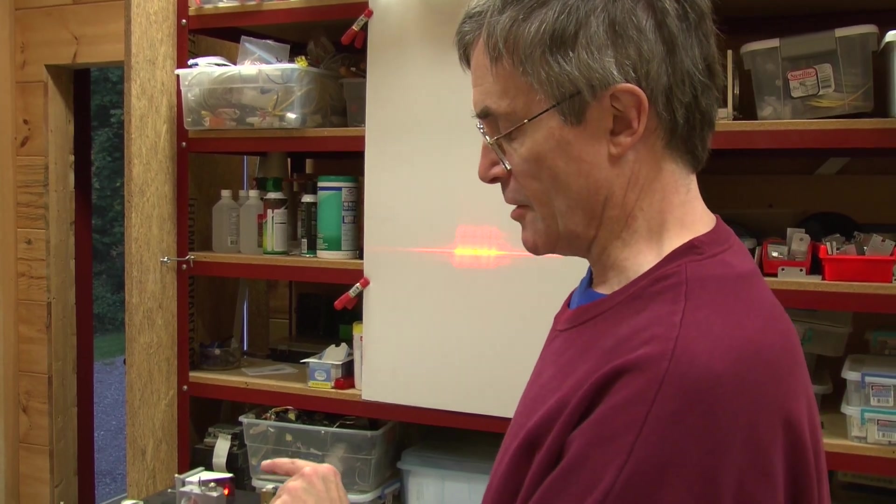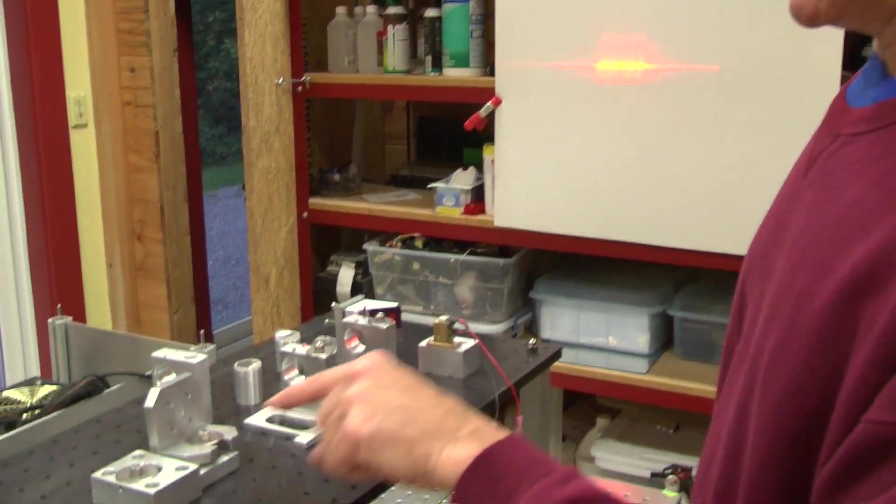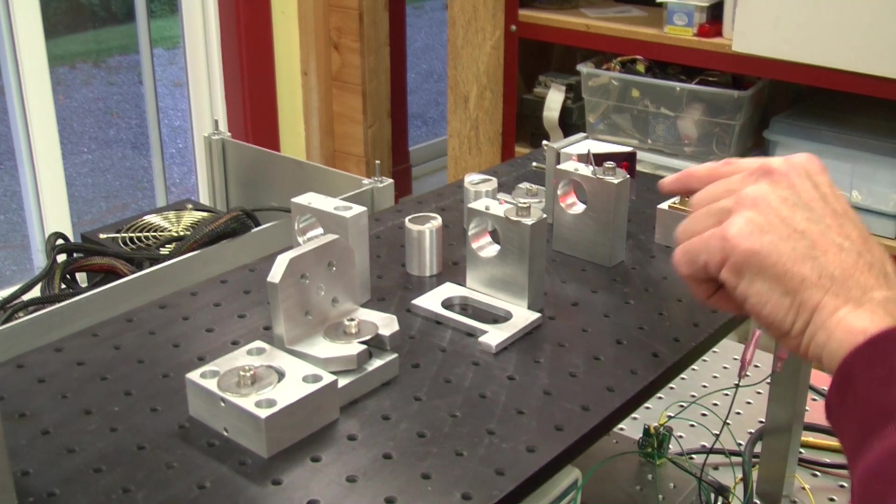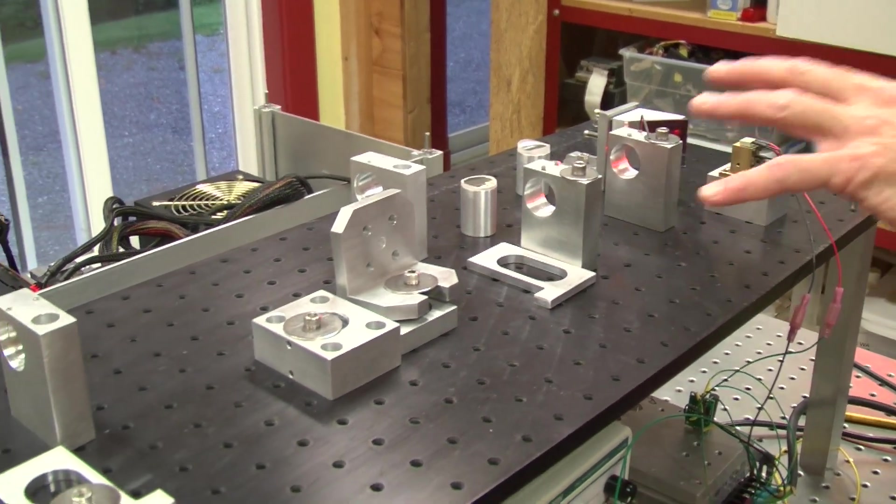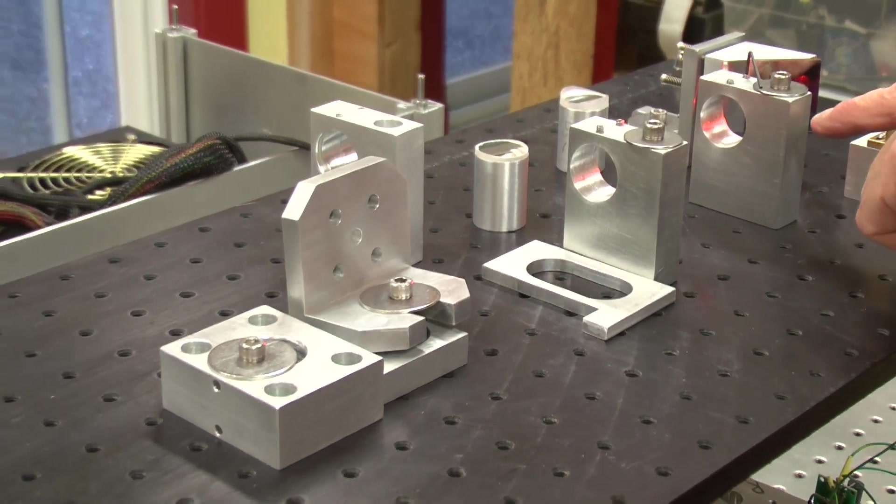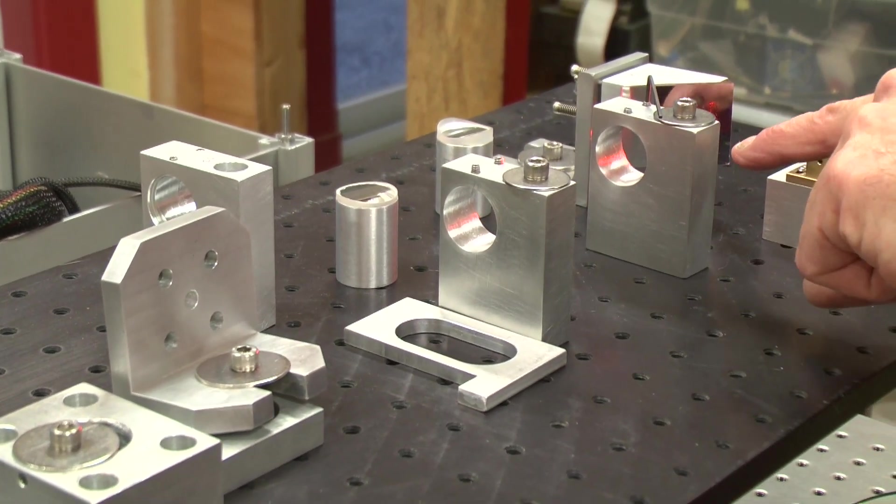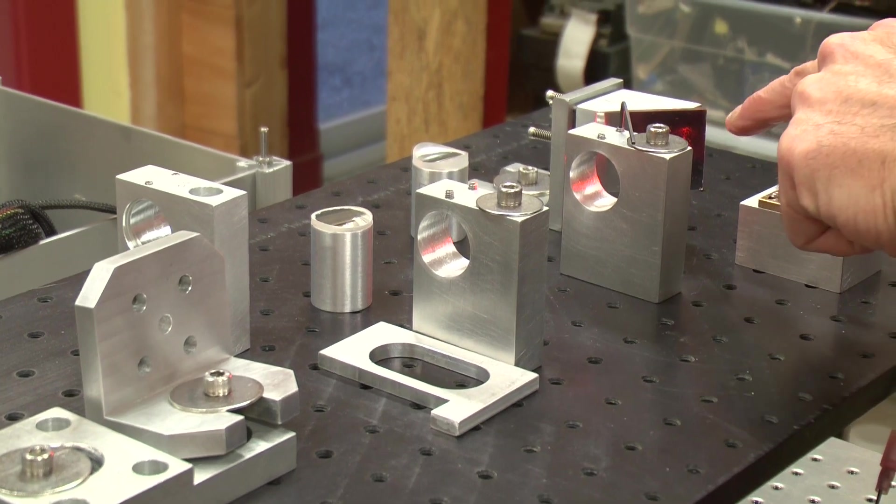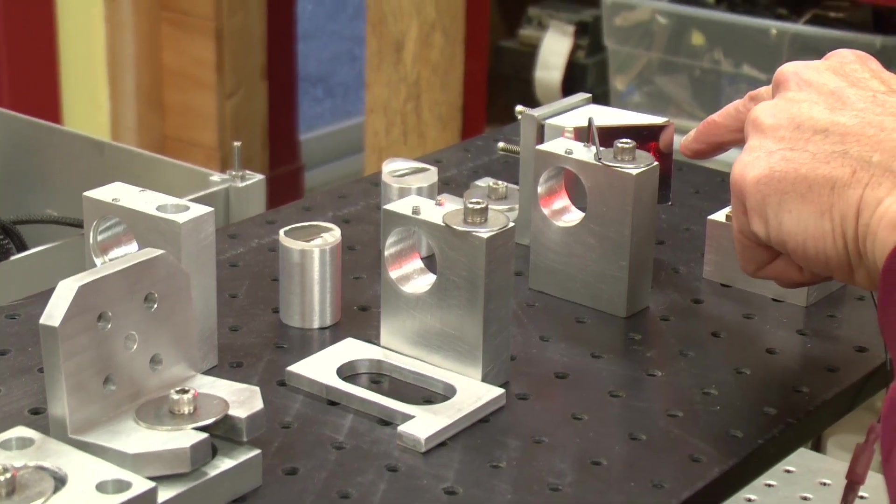What I've also done here is I've set up some optical supports to allow me to install the beam correction optics. I should correct myself, beam manipulation optics, because what I'm going to be doing is I'm going to change the aspect ratio of this tiny vertical stripe